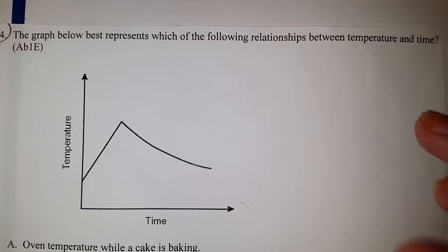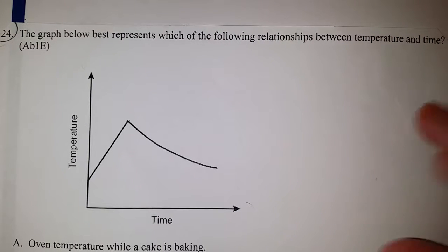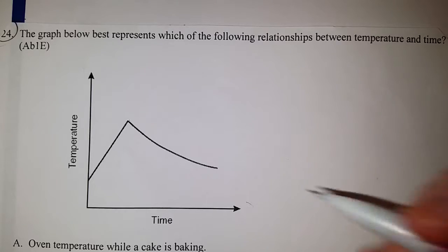All right guys, on to the last problem. I'm working on number 24 on our Monday Star review. Number 24 is saying the graph below best represents which of the following relationships between temperature and time. As you know, time is along your x-axis, temperature is along your y-axis.